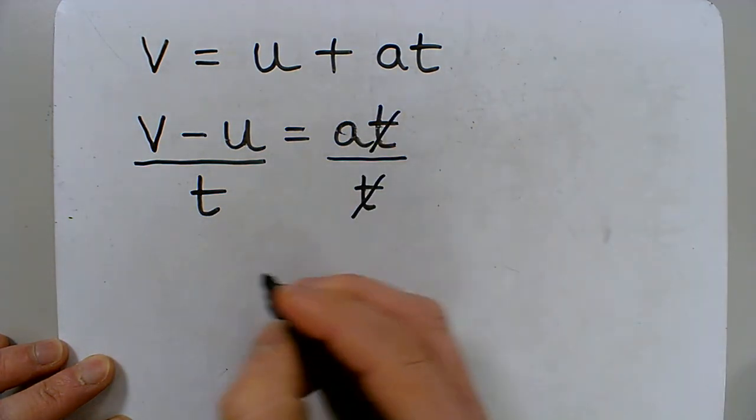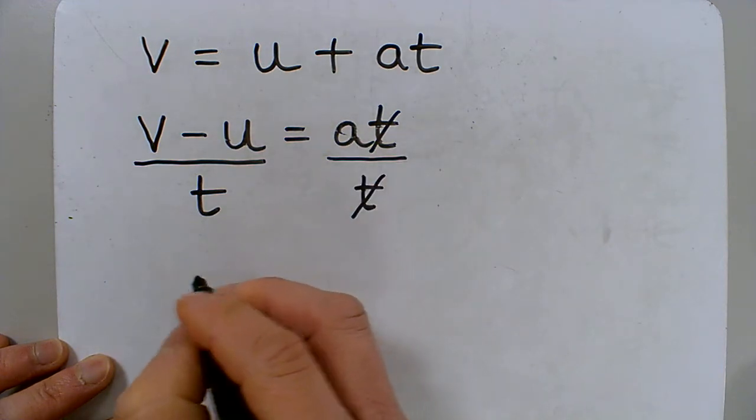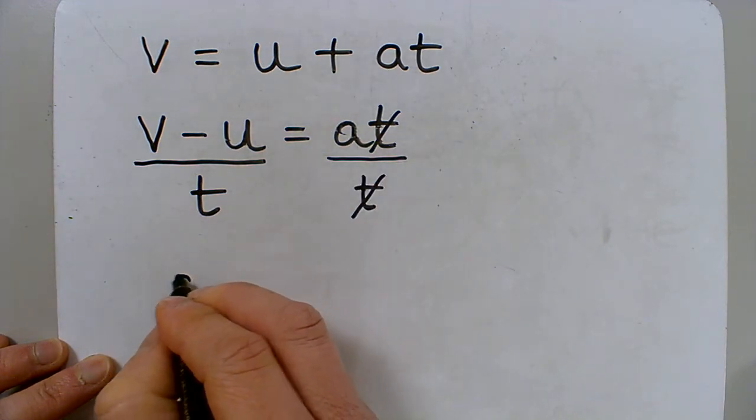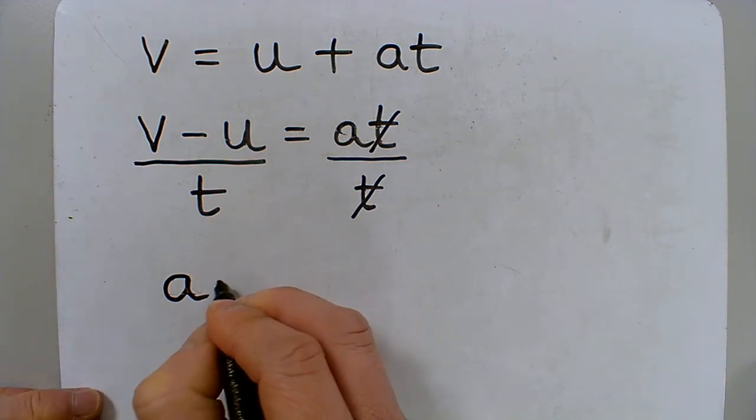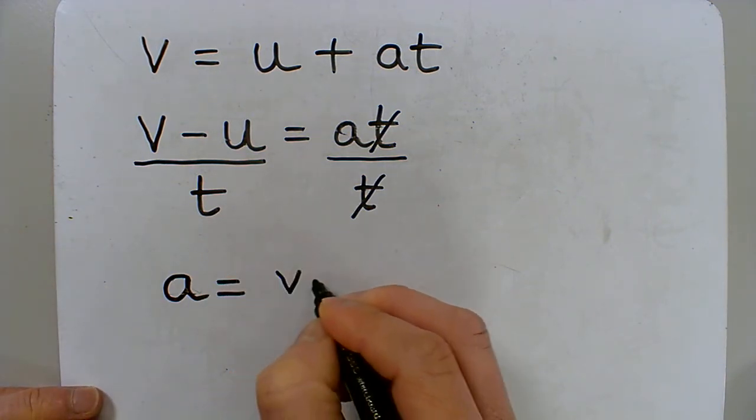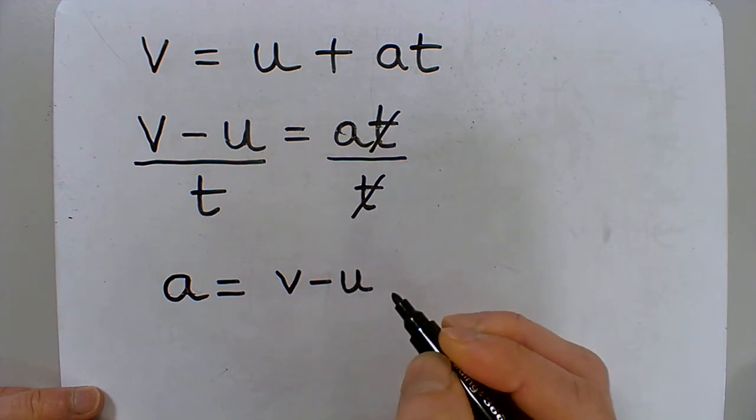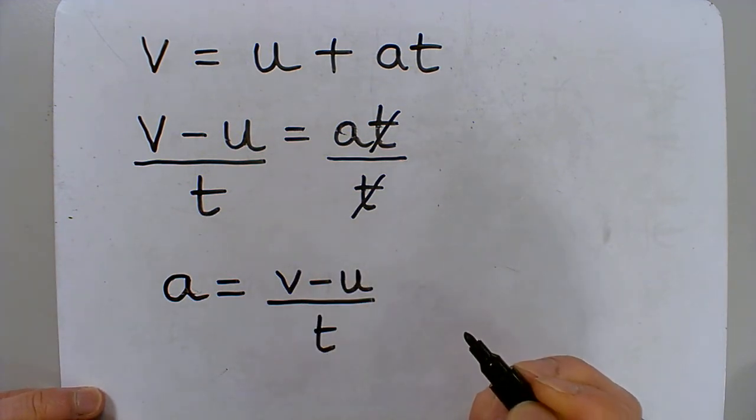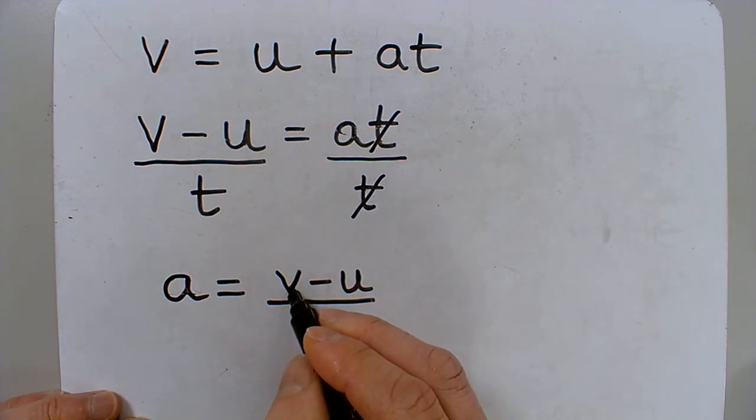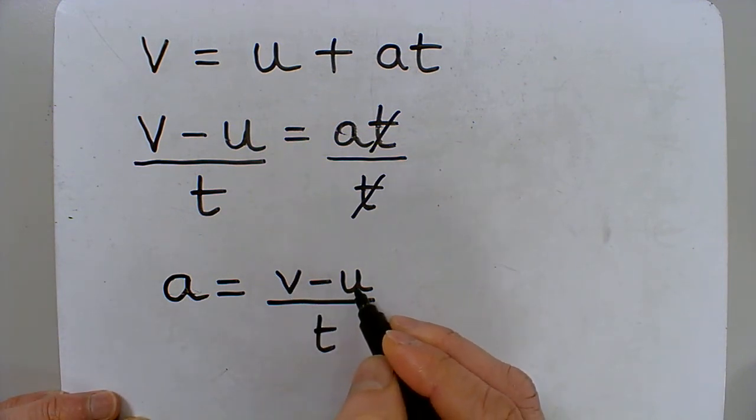So all that we're left with, if we rewrite the equation so that we have a on its own, is a equals v minus u divided by t. So this is the final velocity minus the initial velocity.